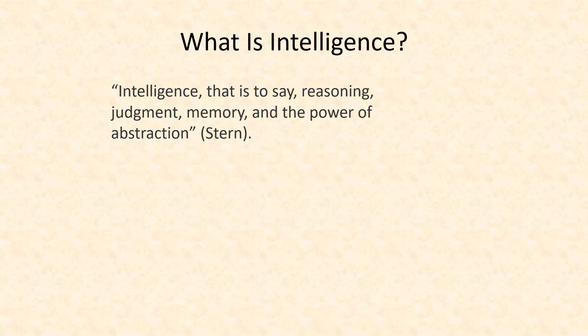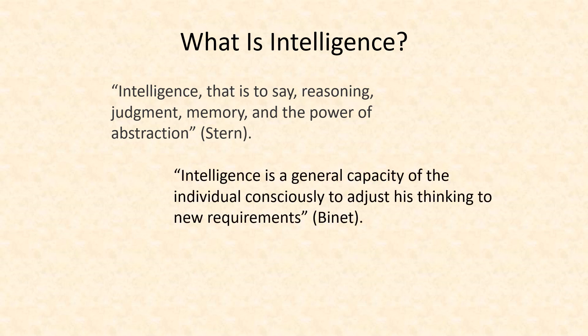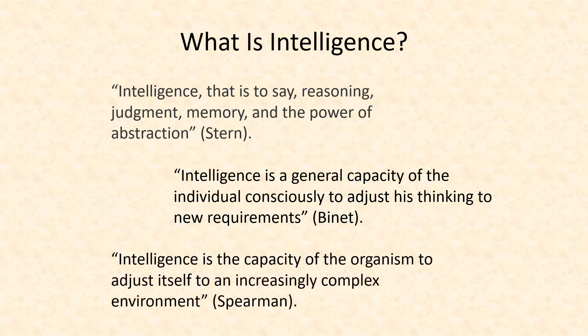Stern says that intelligence is reasoning, judgment, memory, and the power for a person to think in terms of abstract thoughts. Alfred Binet, who developed the concept of IQ or intelligence quotient, said intelligence is a general capacity of a person to consciously adjust your thinking to new requirements — so if you have that adaptation, that's showing your intelligence. Spearman said that intelligence is the capacity of a person or an organism to adjust itself to an increasingly complex environment. So what really is intelligence?